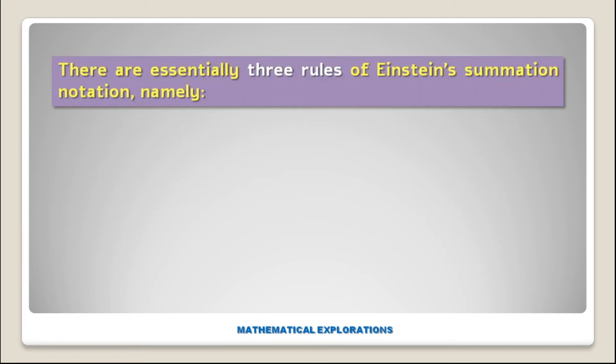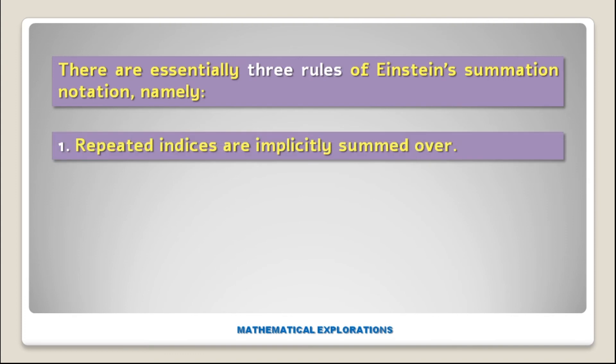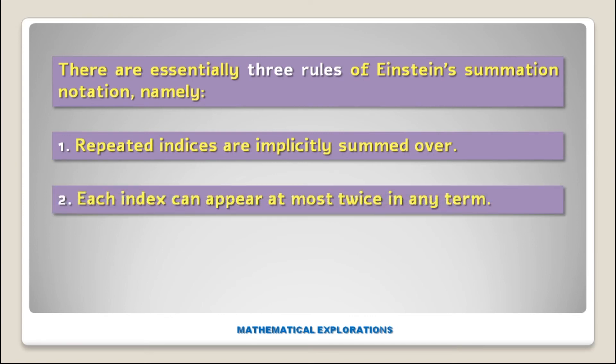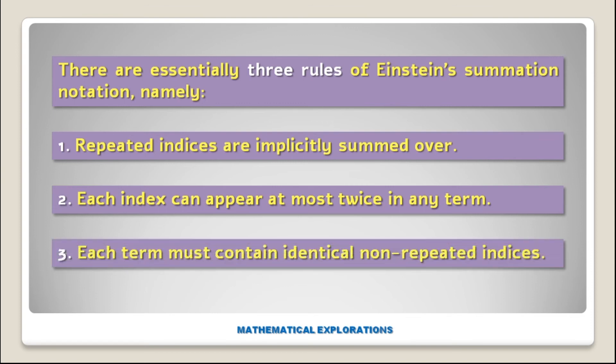There are essentially three rules of Einstein's summation convention: number 1, repeated indices are implicitly summed over; number 2, each index can appear at most twice in any term; number 3, each term must contain identical non-repeated indices. These are the three rules of Einstein's summation notation or convention.